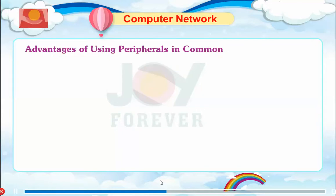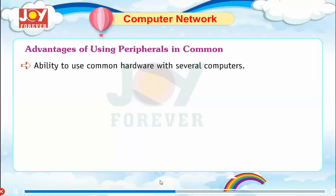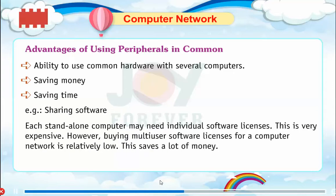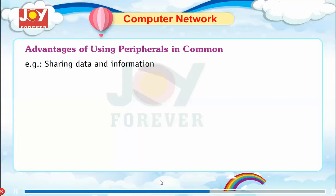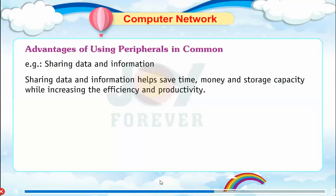Advantages of using peripherals in common: ability to use common hardware with several computers, saving money, and saving time. For example, sharing software — each standalone computer may need individual software licenses, which is very expensive. However, buying multi-user software licenses for a computer network is relatively low cost and saves a lot of money. Sharing data and information helps save time, money, and storage capacity while increasing efficiency and productivity.